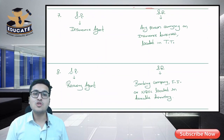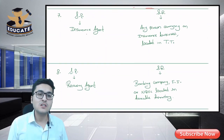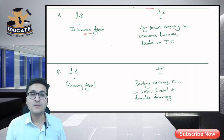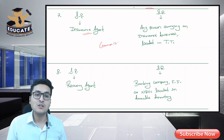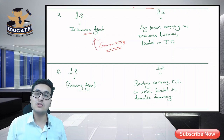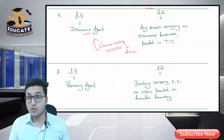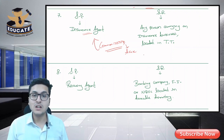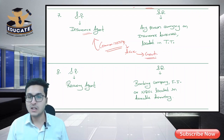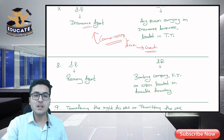Next is insurance agent. What does an insurance agent do? The insurance agent brings business to the insurance company. In return, the insurance agent receives a commission from the insurance company. The insurance company will pay GST on the commission amount directly to the government.